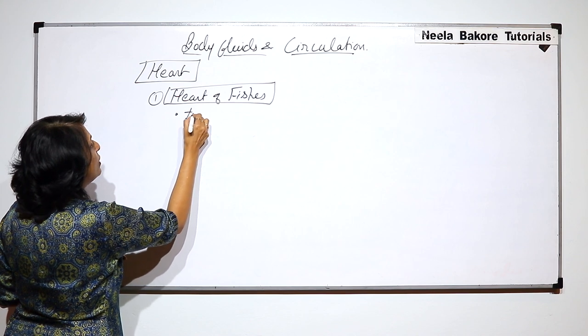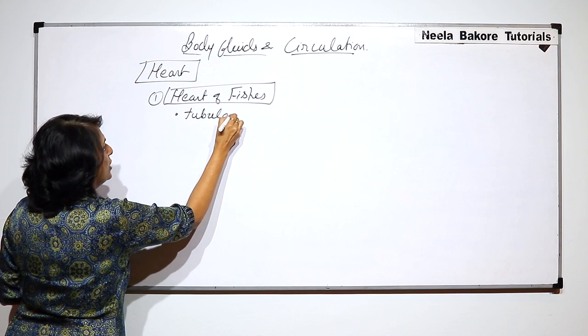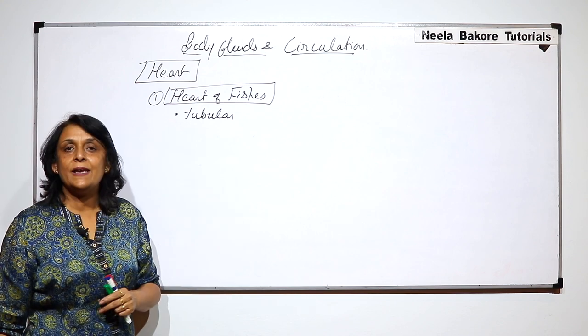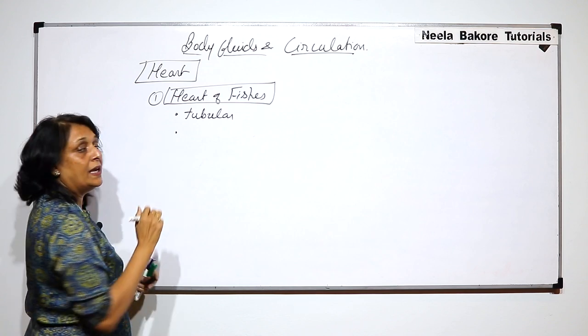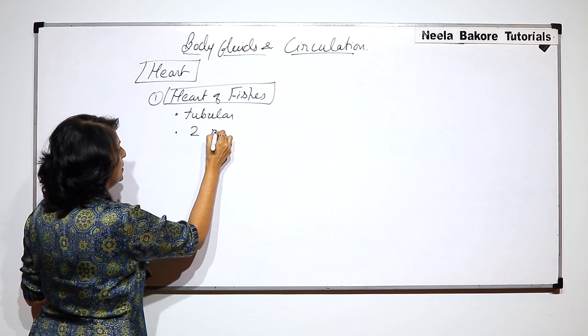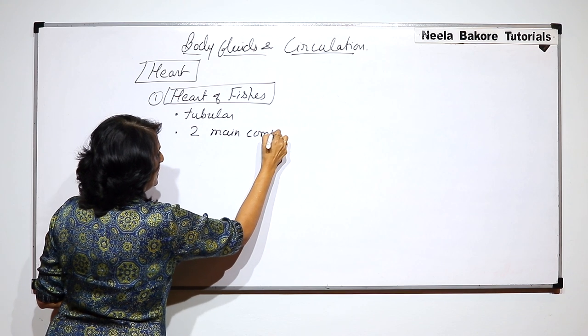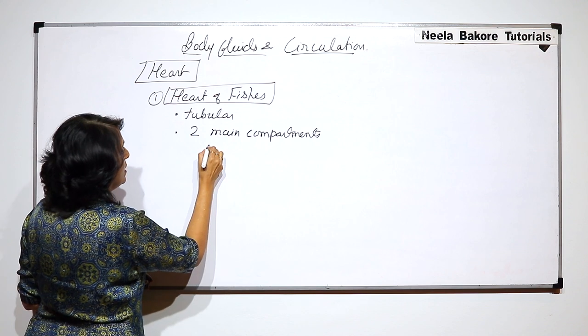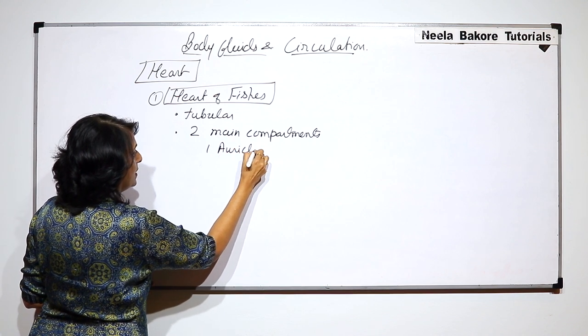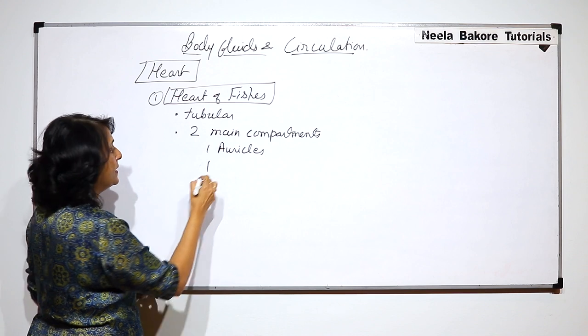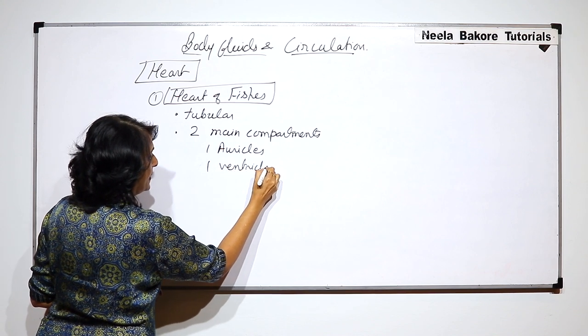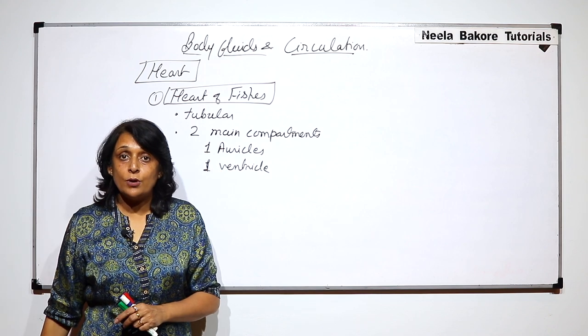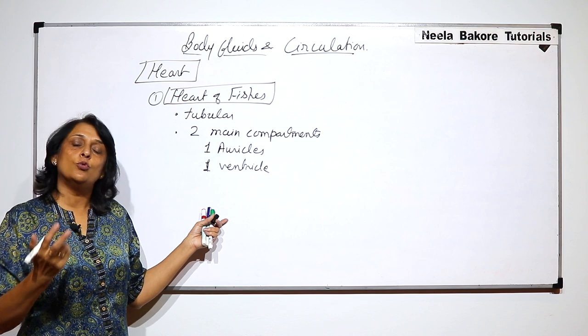It is a tubular structure. A tube-like heart, not a structure like our heart. Our heart is somewhat triangular, conical. This is a tube-like heart. There are two main compartments. And which are these two main compartments? One is auricle and one is ventricle. This means this is a two-chambered heart. So fish's heart is two-chambered heart.